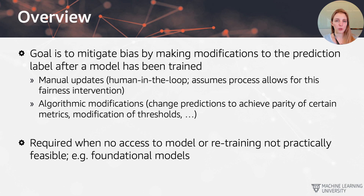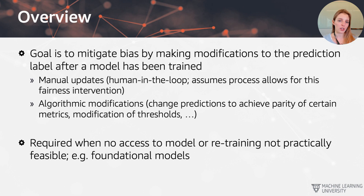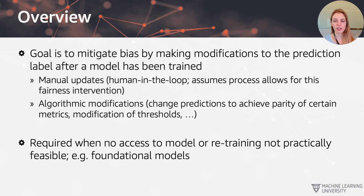Another idea is algorithmic modifications. We can change predictions to achieve parity of certain metrics by modifying, for example, the thresholds for different groups. This is required when there's no direct access to the model or when retraining the model is practically not feasible.